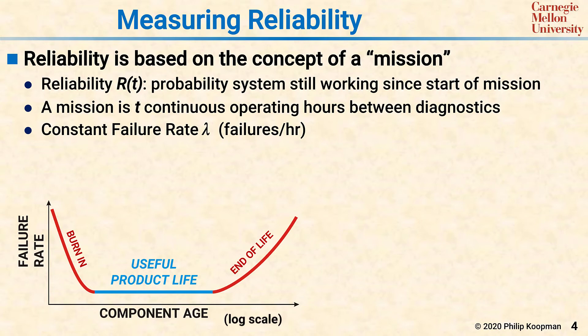This is often called the burn-in phase and can last 1, 10, or 100 hours, depending on the system. After burn-in, the useful product life does indeed provide a more or less constant lambda value. But we also need to worry about the end of product life, where lambda increases as components begin to wear out due to use and age. It's important to note that the component age axis is logarithmic, so the burn-in period is relatively short, while the end-of-life period is a very long, slow ramp-up.